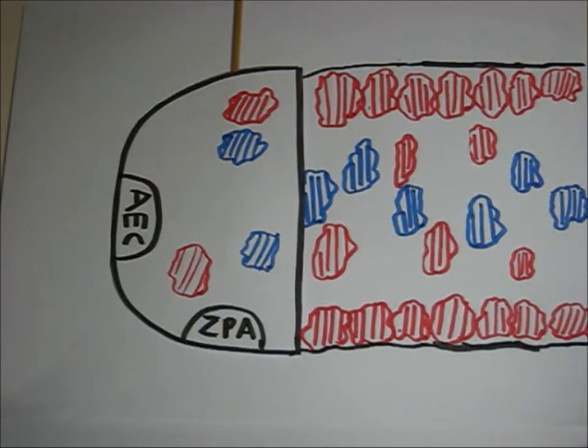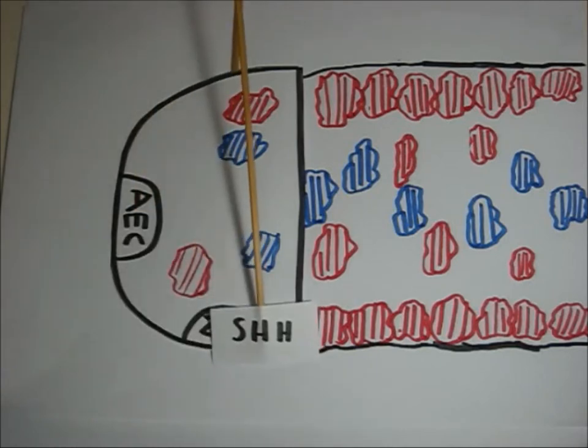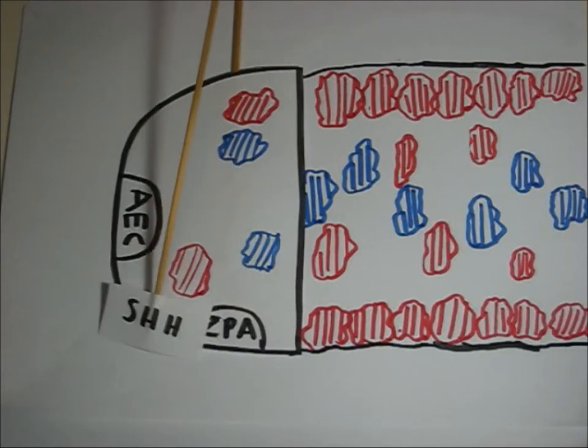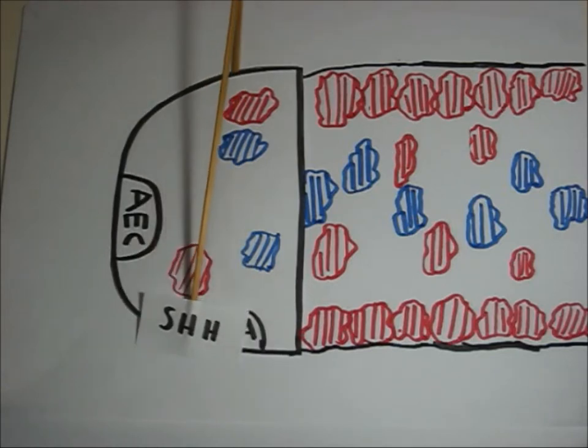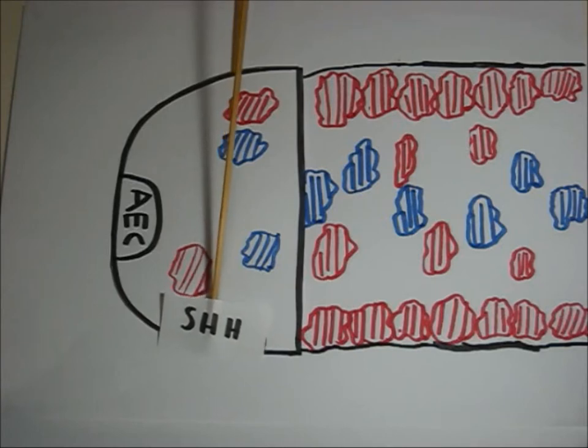In a regenerating salamander limb following amputation, both the anterior-posterior and the proximal-distal axes of the limb bud require the expression of sonic hedgehog, or SHH, from the zone of polarizing activity.